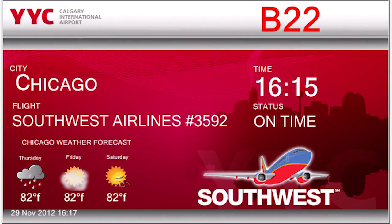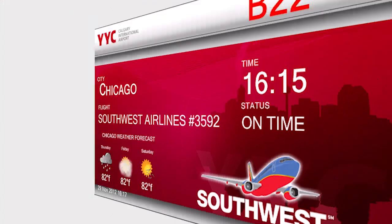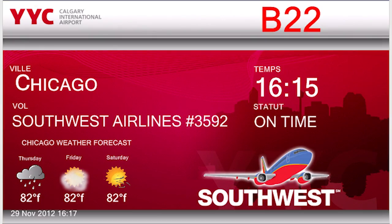The system is also intelligent enough to recognize a default language for a destination. So a flight that may be departing to Paris can display and make an announcement in English and then in Parisian French.